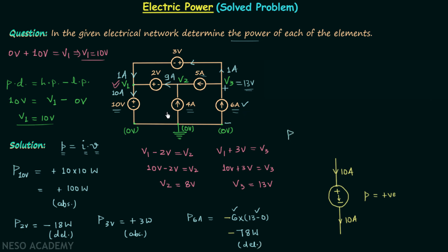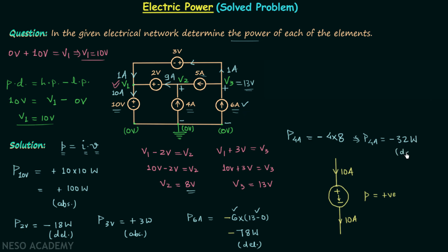For the element connected to V2: V2 = 8 volts is the higher potential compared to 0 volts. Current enters the positive terminal (higher potential side), so we have a negative sign. Magnitude = 4 × (8 − 0) = 4 × 8 = 32 watts. Therefore P = −32 watts — power is delivered and this element acts as a source.